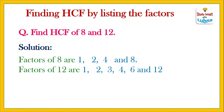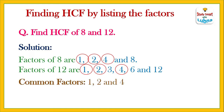Now, the common factors of 8 and 12 are 1, 2, and 4. The highest common factor is 4, which is the HCF. So the HCF of 8 and 12 is 4.